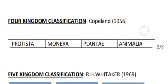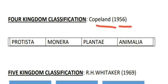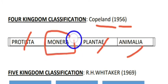After seeing these limitations, the four kingdom classification was given in 1956. It included Protista, Plantae, and Animalia, and added another kingdom — Monera.